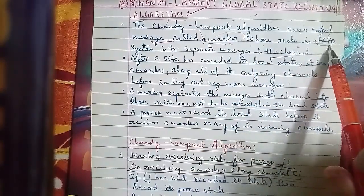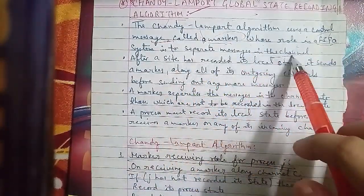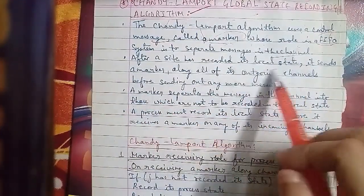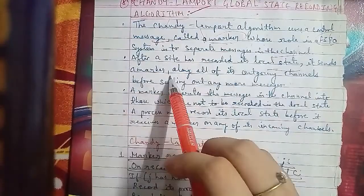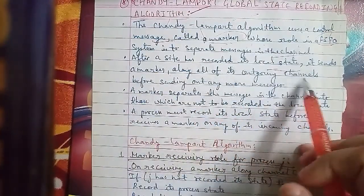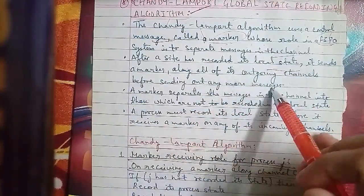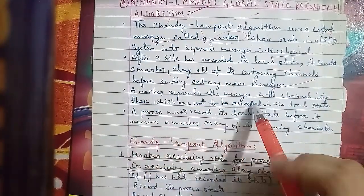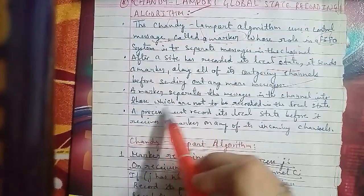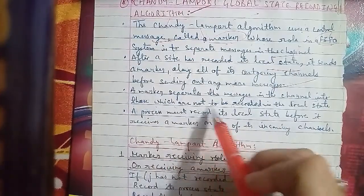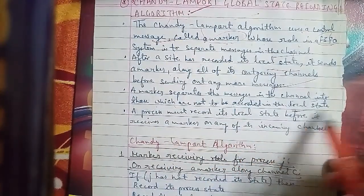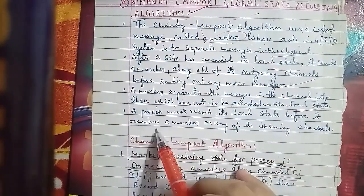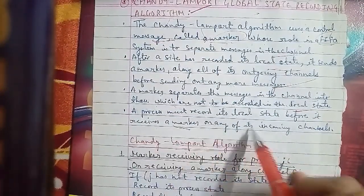After a site has recorded its local state, it sends a Marker along all its outgoing channels before sending any further messages. The Marker separates the messages in the channel into those which are and are not to be recorded in the local state. A process must record its local state before it receives a Marker on any of its incoming channels.